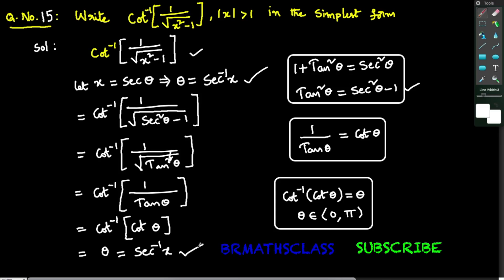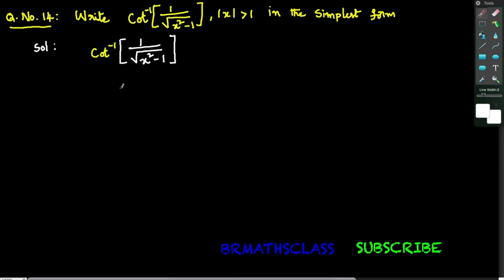Write cot inverse of 1 divided by square root of x squared minus 1 in the simplest form. To do this, you need to know some of the trigonometry formulas.